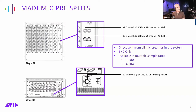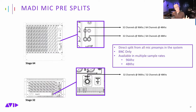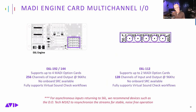These MADI outputs are direct taps off the stage racks — great for MADI recording or connecting to another MADI console. The Stage 32 has only one spigot: 32 channels at 96k or 32 channels at 48k. If you have multiple Stage 32s, you can use a MADI collation device to combine streams, subject to the AES spec of 64 channels at 48k or 32 channels at 96k.